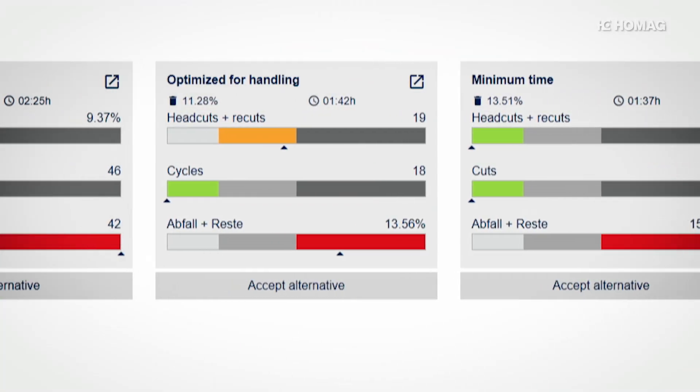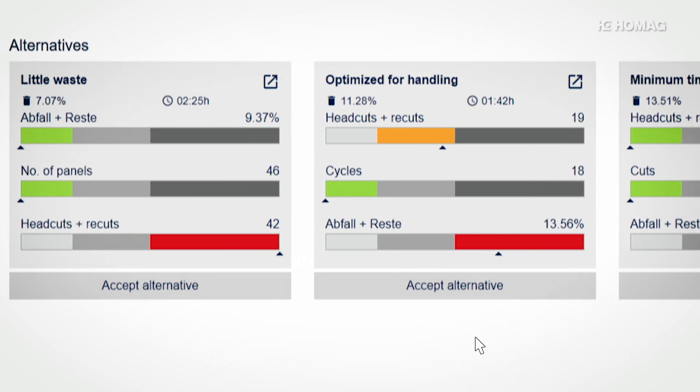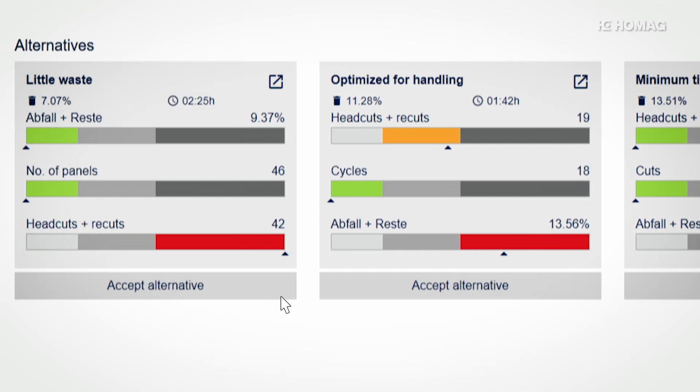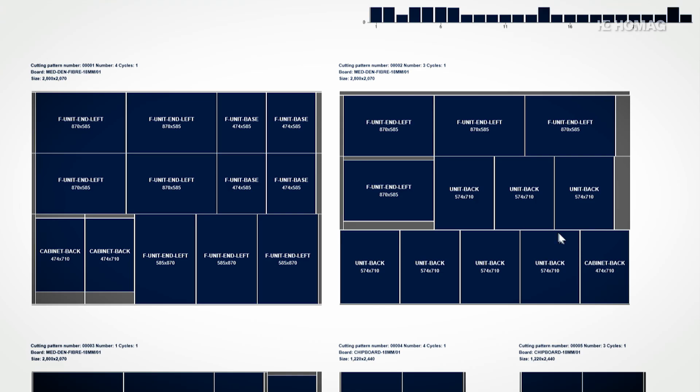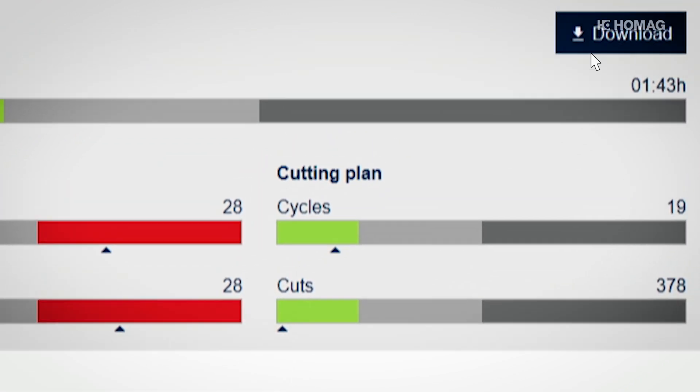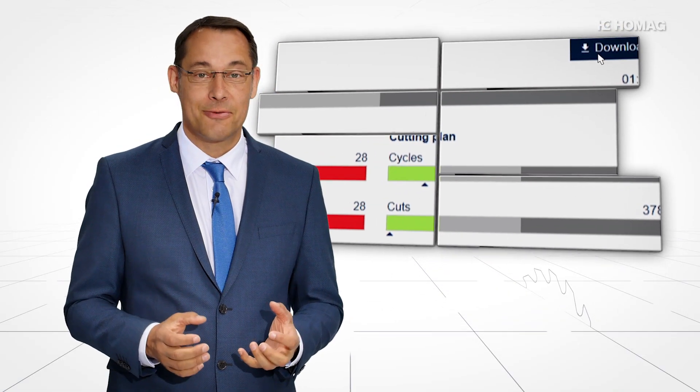The user can immediately compare the results, select the cutting pattern that is ideal for him, and send it straight to the saw. When cutting patterns are optimized today, customers often make adjustments to improve them. They change various basic settings until they get the desired result. According to our surveys, this costs our customers on average one to two hours every day.